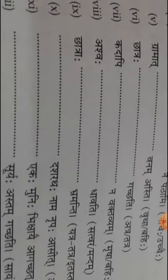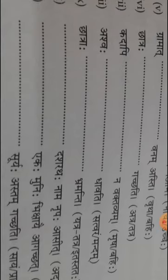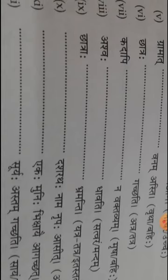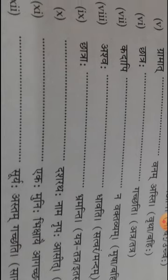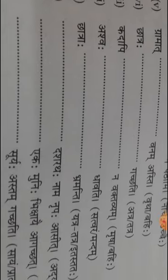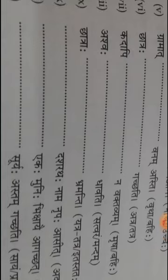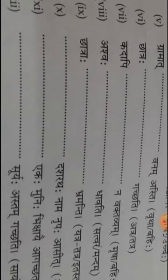Seven. Kadapi dash na bhaktabhyam. Nisha means lie, vahi means outside. Eight. Ashwa dash dhamati. Swatara means very fast and mandam means very slow.